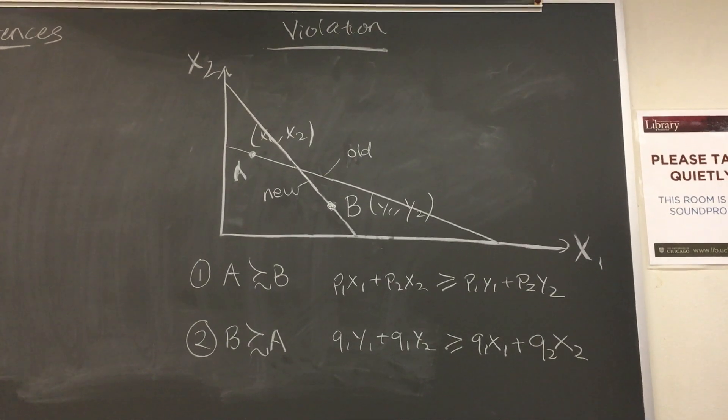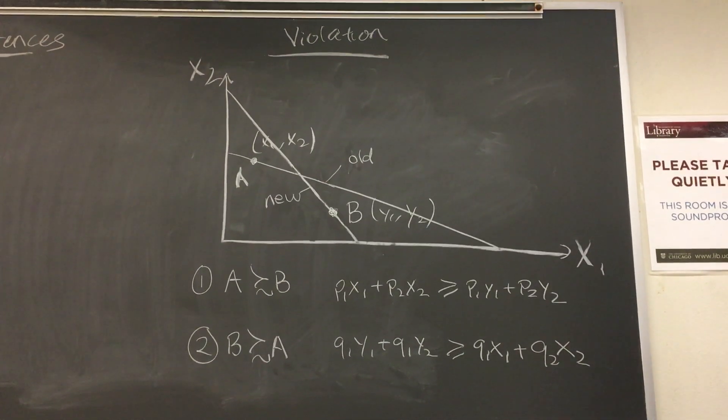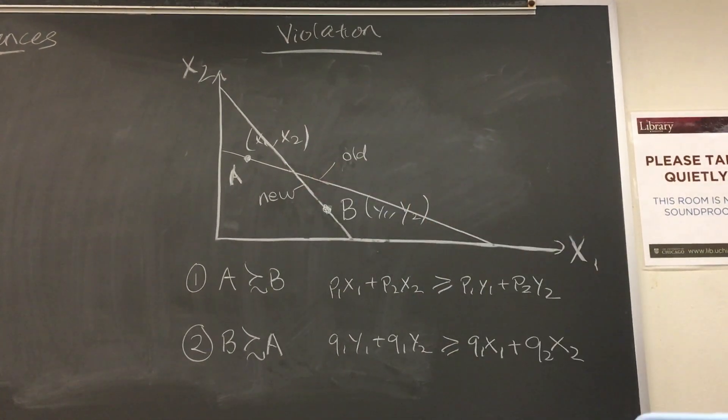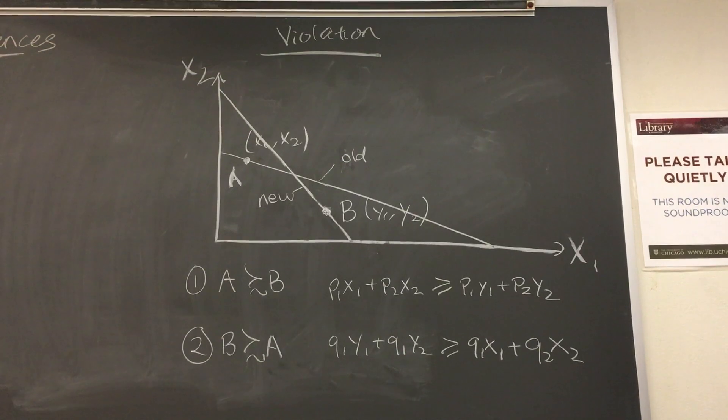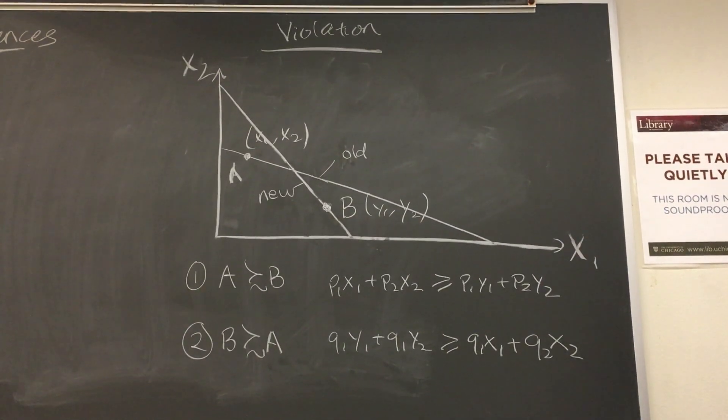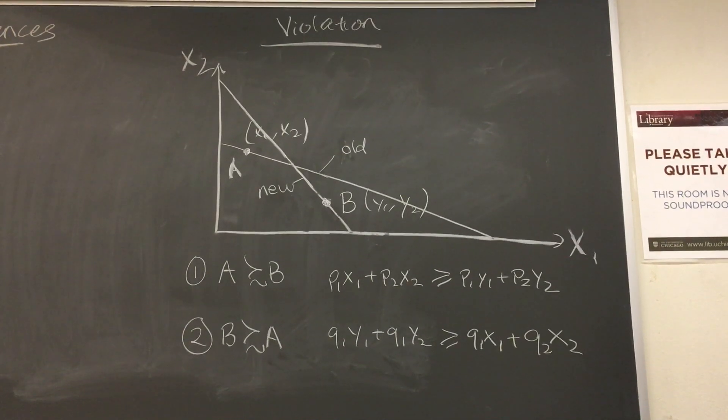Now we're going to look at an example where WARP is violated. In this diagram, we see a consumer who chose bundle A, X1, X2, in the first budget constraint. We also see that bundle B, Y1, Y2, was affordable in this case, but was still not chosen, so bundle A is revealed preferred to bundle B.